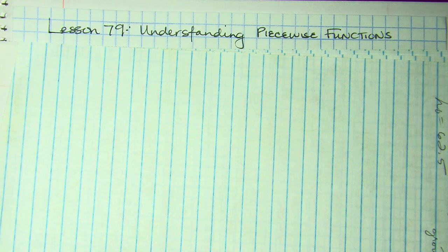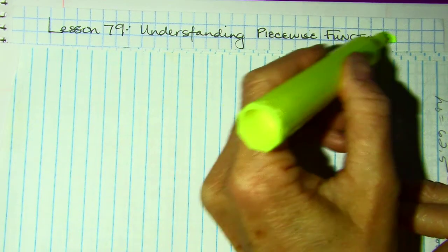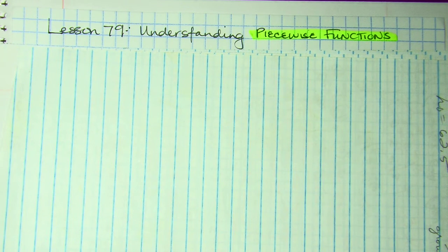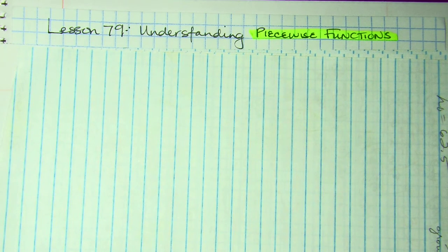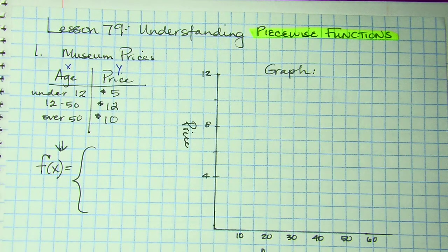Good morning, Algebra 2. We are going to be covering Lesson 79, and there are lots of pieces to it. It's on understanding piecewise functions. Piecewise functions means you have pieces of different functions together. I'm going to do an example with you before we jump into the lesson practice.